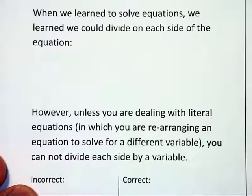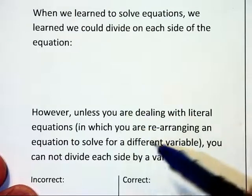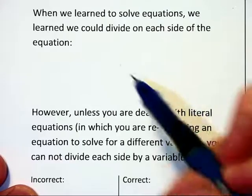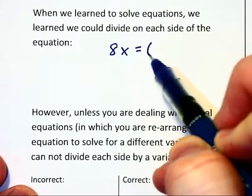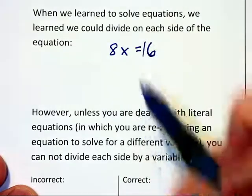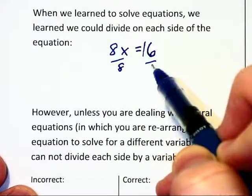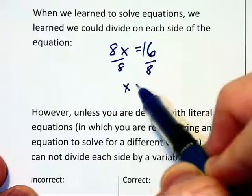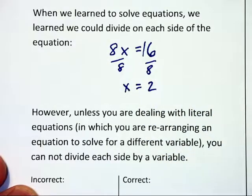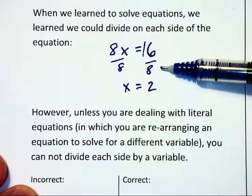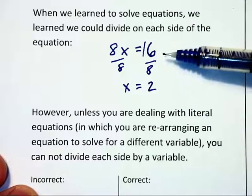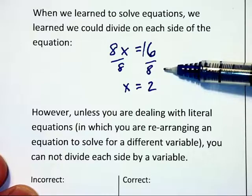Now I would like to call something to your attention here. Back when you first learned to solve equations you learned that whenever you had something like 8x is equal to 16 you could divide both sides by 8 and you'd have x is equal to 2. And that was a true statement but what happened is you thought to yourself I'm allowed to divide on both sides of an equation as long as I'm doing the same thing to both sides.